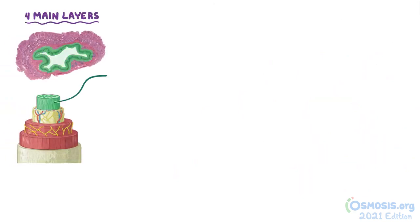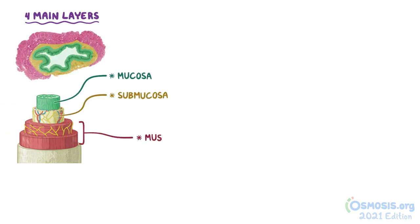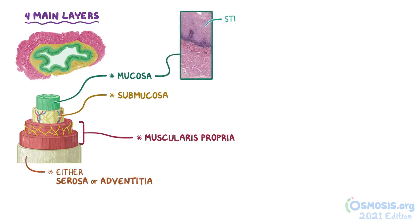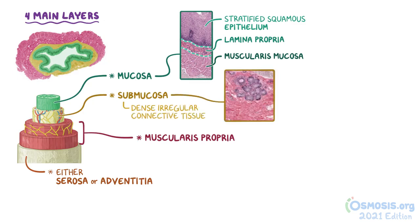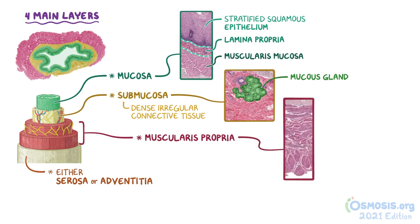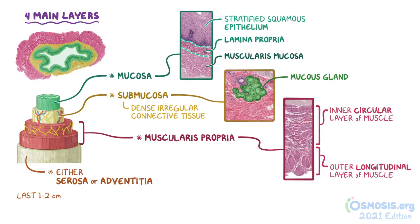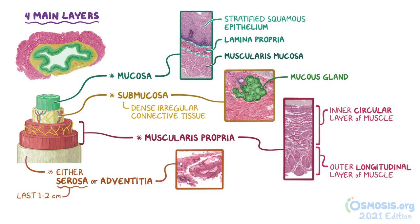As a quick recap: the wall of the esophagus has four main layers — the mucosa, submucosa, muscularis propria, and either the serosa or adventitia. The mucosa consists of three parts: the stratified squamous epithelium, its supporting lamina propria, and a thin layer of smooth muscle called the muscularis mucosa. The submucosa consists mostly of dense irregular connective tissue, but also contains unique mucous glands only seen within the submucosa in the esophagus and the duodenum. The muscularis propria is the main layer of both smooth and skeletal muscle, with an inner circular layer and an outer longitudinal layer. The last 1-2 cm of the esophagus are surrounded by an outer layer of serosa, but the majority of the esophagus has an outermost layer of connective tissue called the adventitia.